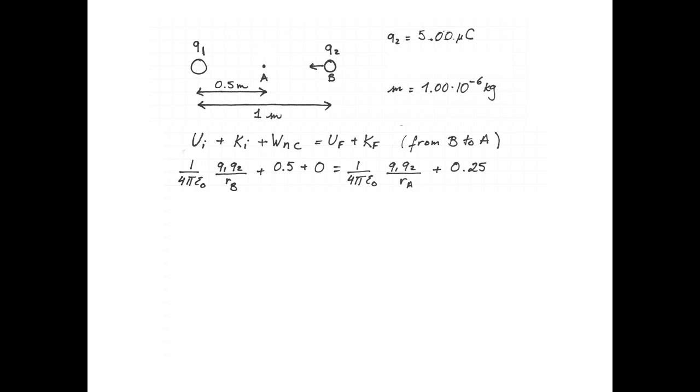The potential energy of two charges is 1/(4πε₀) × q1q2/Rb at point B. And the potential energy at point A is 1/(4πε₀) × q1q2/Ra.